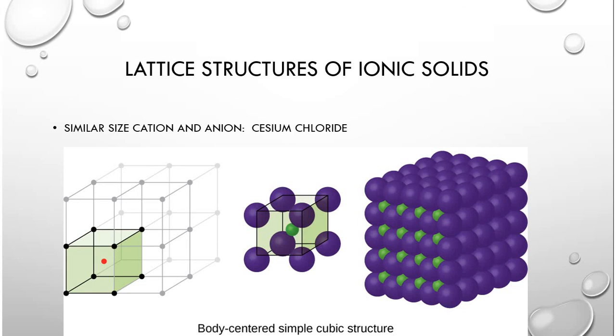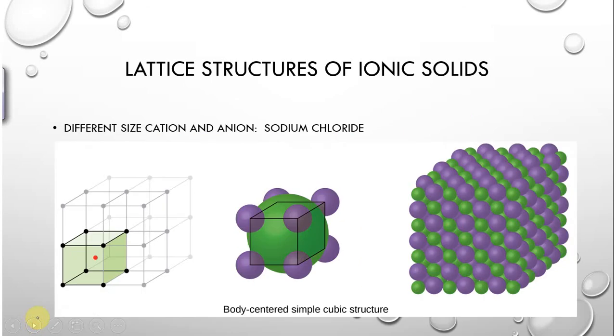So again, if you had a similar size cation and anion, thinking back to Unit 7 and 111, that would be something like cesium and chlorine. You could have a nice body centered cube where everything would fit in the holes that are created, no problem. On the other hand, if you have very different sizes, it's going to look a little bit more like that where your anions or your cations are going to be spread out a little bit more than you would otherwise have. But the idea is still the same.